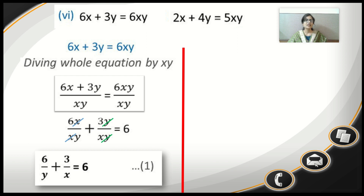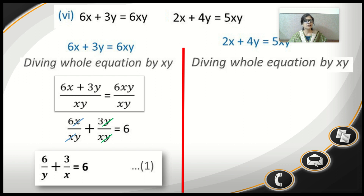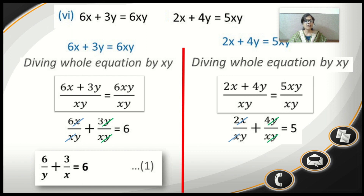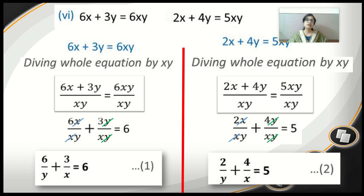Now consider the second equation: 2x plus 4y equals 5xy. Using the same method, we divide throughout by xy. So: 2x upon xy plus 4y upon xy equals 5. Cancelling x and y gives us 2 upon y plus 4 upon x equals 5. We number this as equation 2.